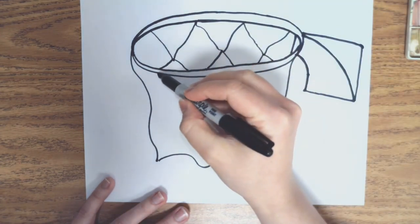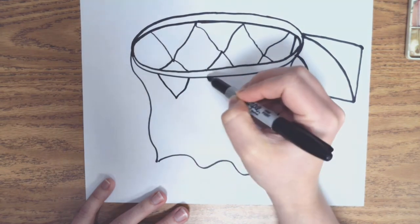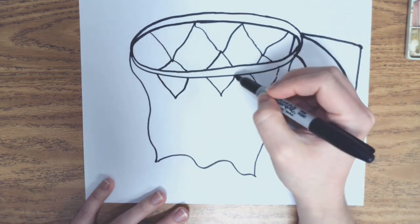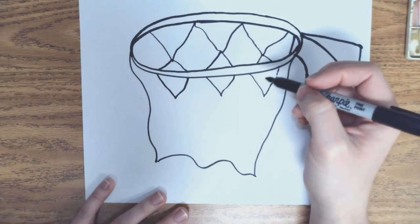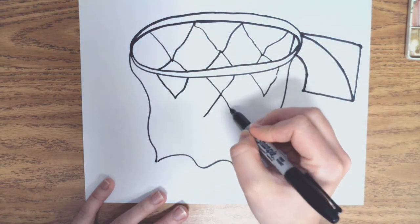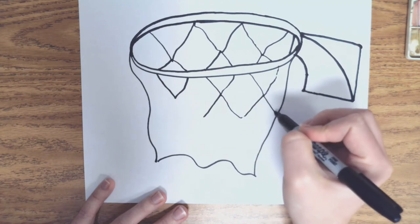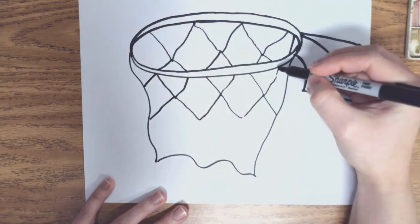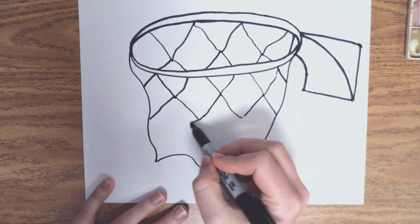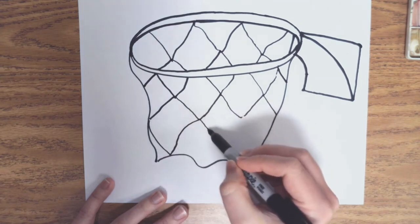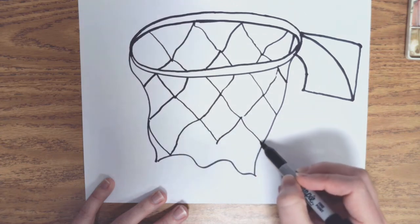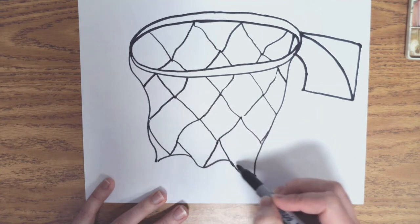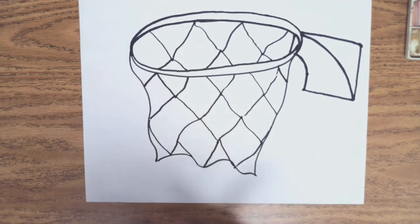And now that we're there, we're going to finish those diamond shapes. And then we're going to continue down until they connect. We're going to do that again, and then they're going to connect. So there we have our hoop.